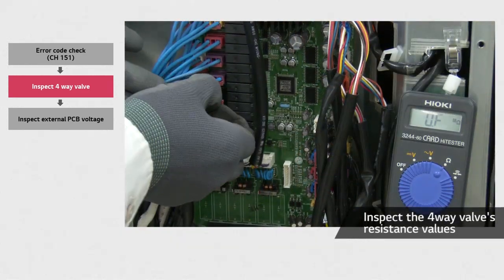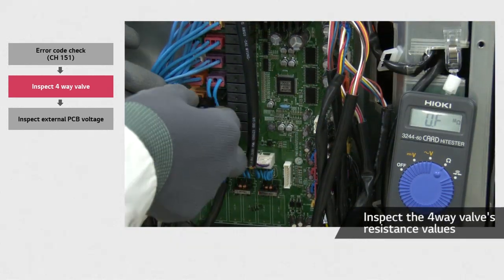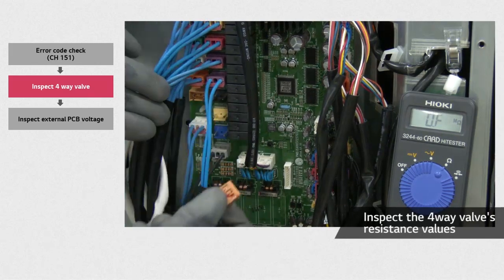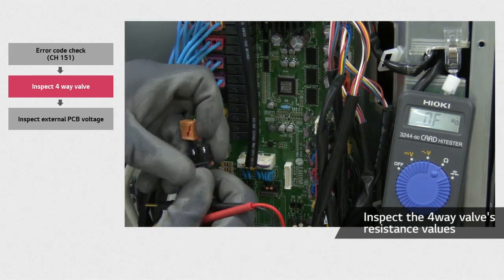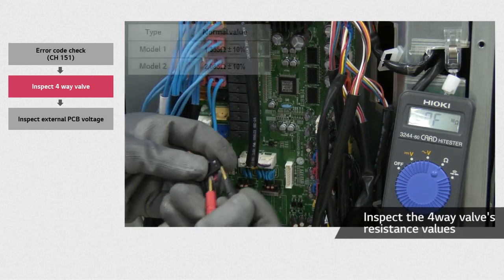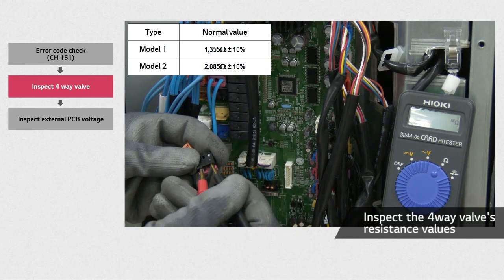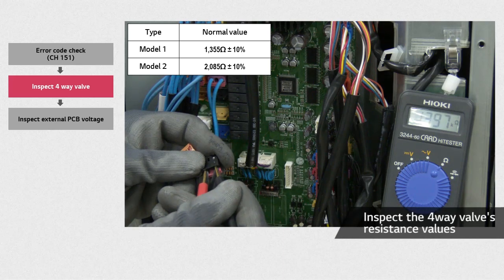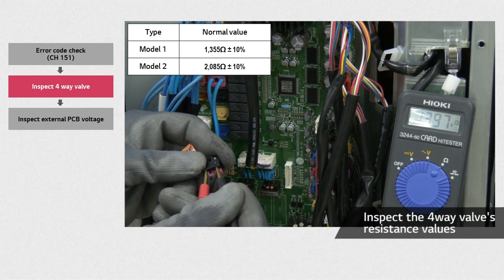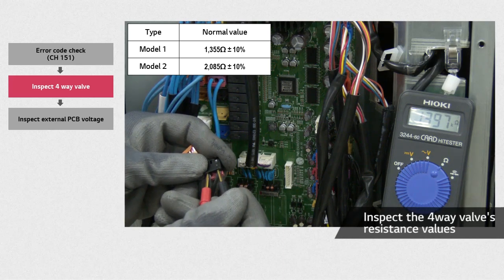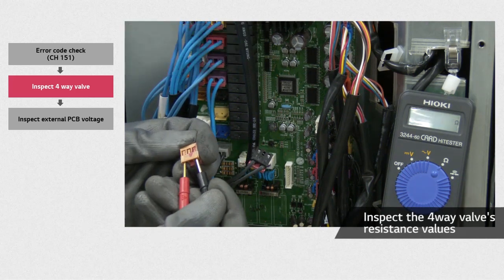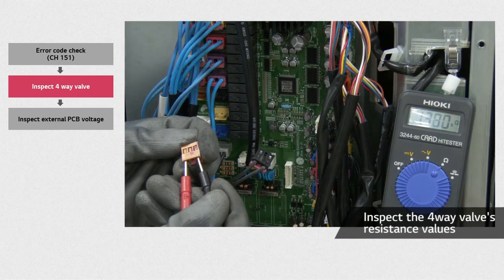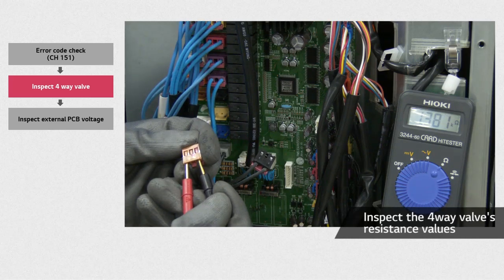Pull out the 4-way valve connectors from the PCB and measure their resistance. The upper valve is connected to the black socket and the lower valve is connected to the brown socket. Depending on the model, normal value for the resistance should be 1,355 ohms plus minus 10%, or 2,085 ohms plus minus 10%. Any value outside this range will generate error CH151.